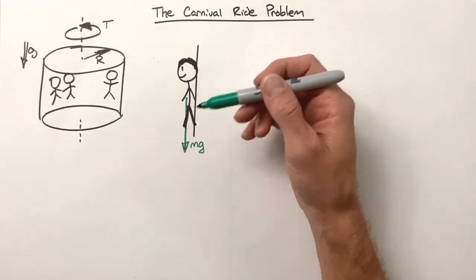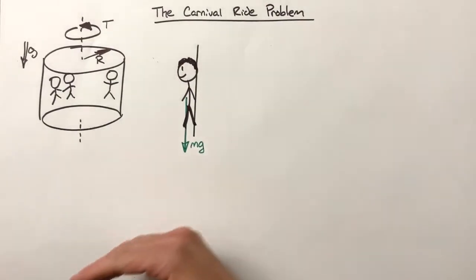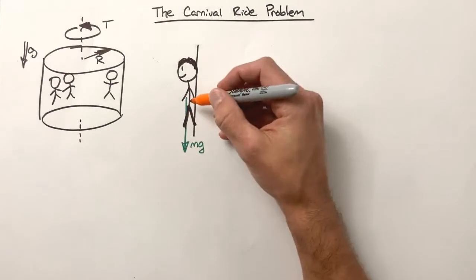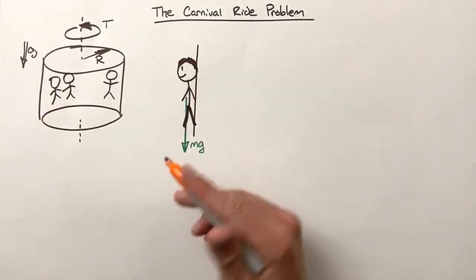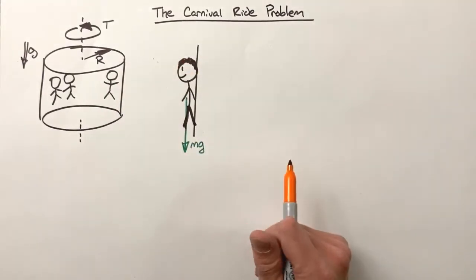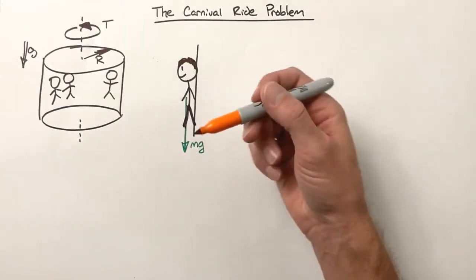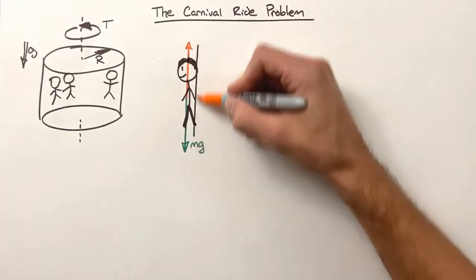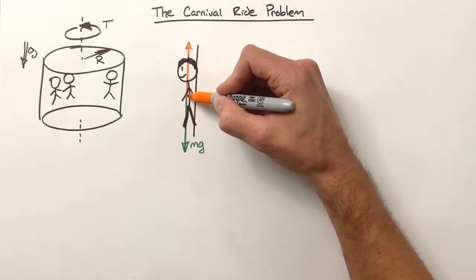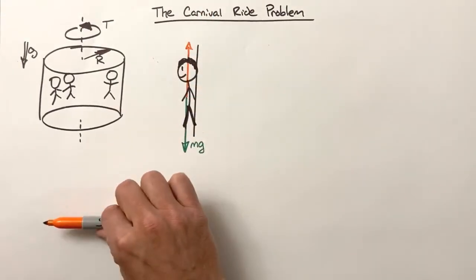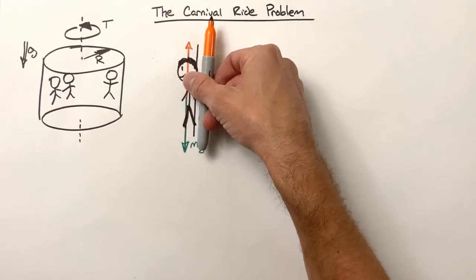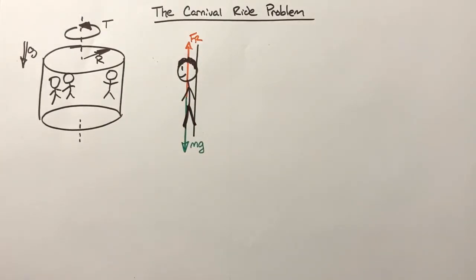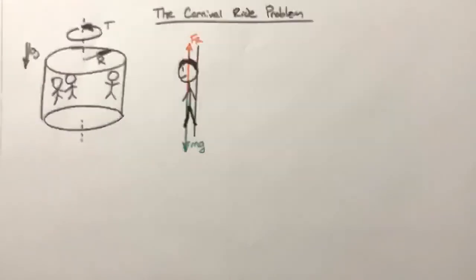I don't know the mass of this person and frankly it doesn't matter — you'll see it goes away later. Because we don't want the person to slide up and down the wall, there needs to be some friction. That's what we're solving for: what coefficient of friction needs to exist to keep people from sliding downward. Friction in this case acts straight upward, parallel to the vertical wall.